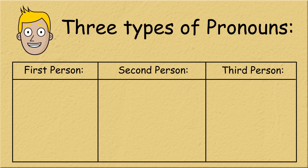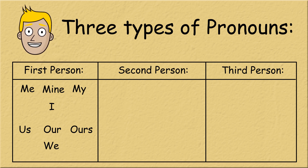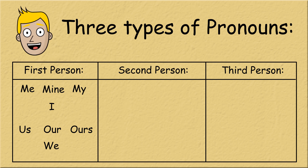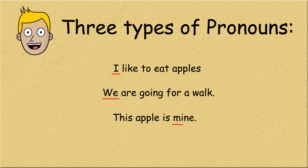They include the singular pronouns me, mine, my and I, along with the plural pronouns us, our, ours and we. We can use first person pronouns when referring to yourself or a group that includes you. Let's look at a few examples: I like to eat apples. We are going for a walk. This apple is mine.